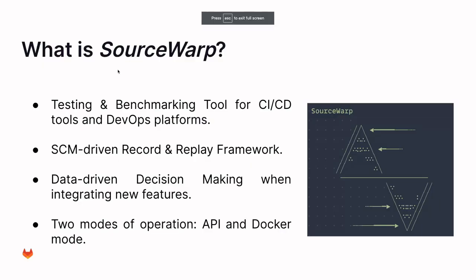SourceWarp is a testing and benchmarking tool for CI-CD tools and DevOps platforms. It's an SCM-driven record and replay framework, which basically means that in the configuration file of SourceWarp, we can specify what are the files that you find relevant.